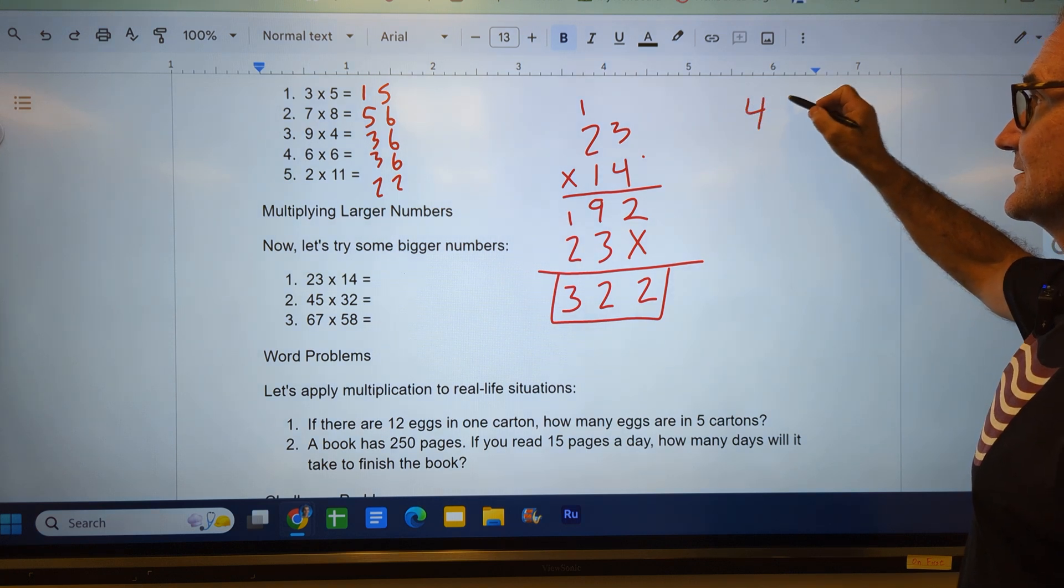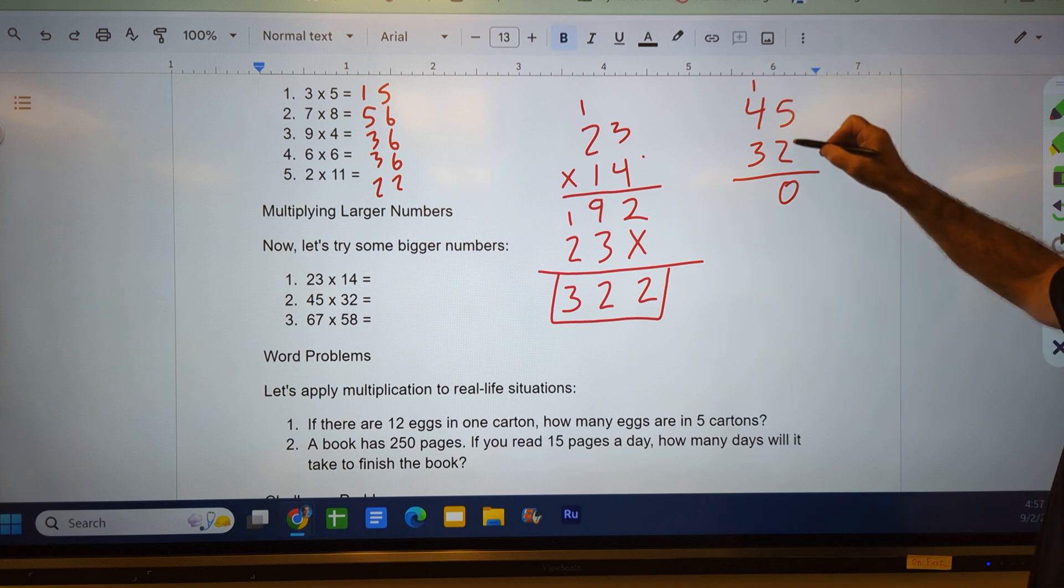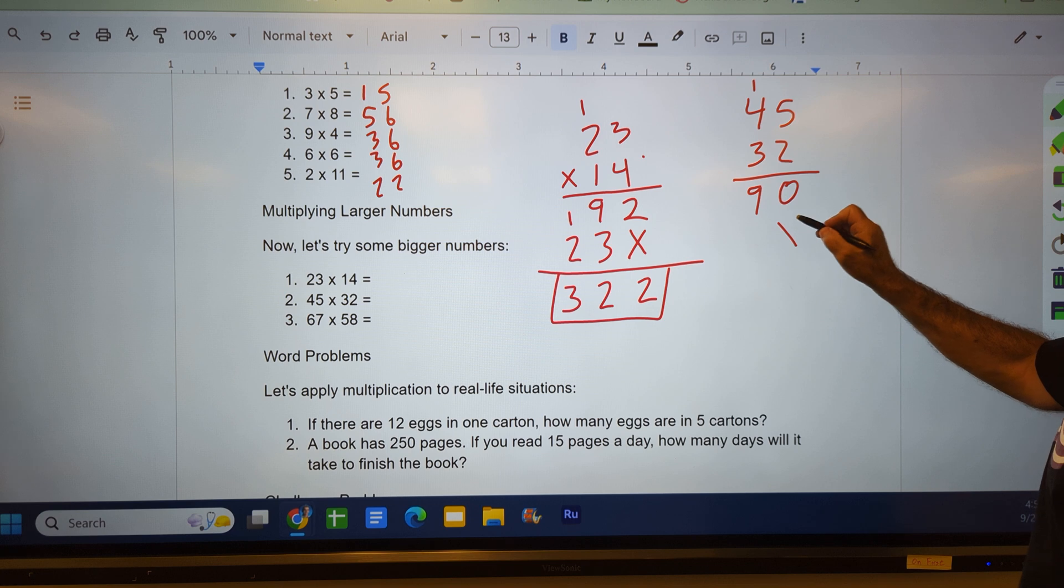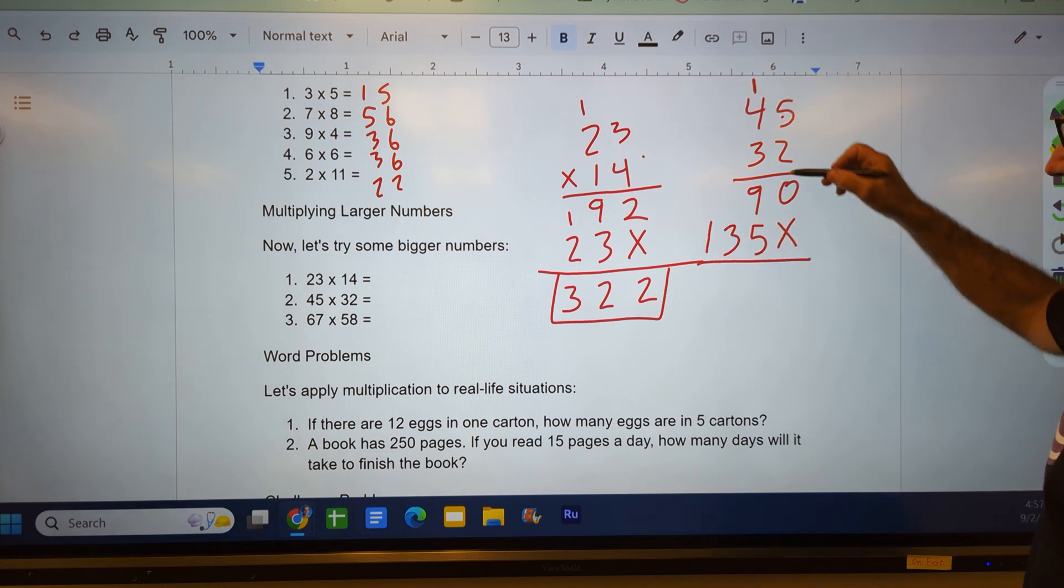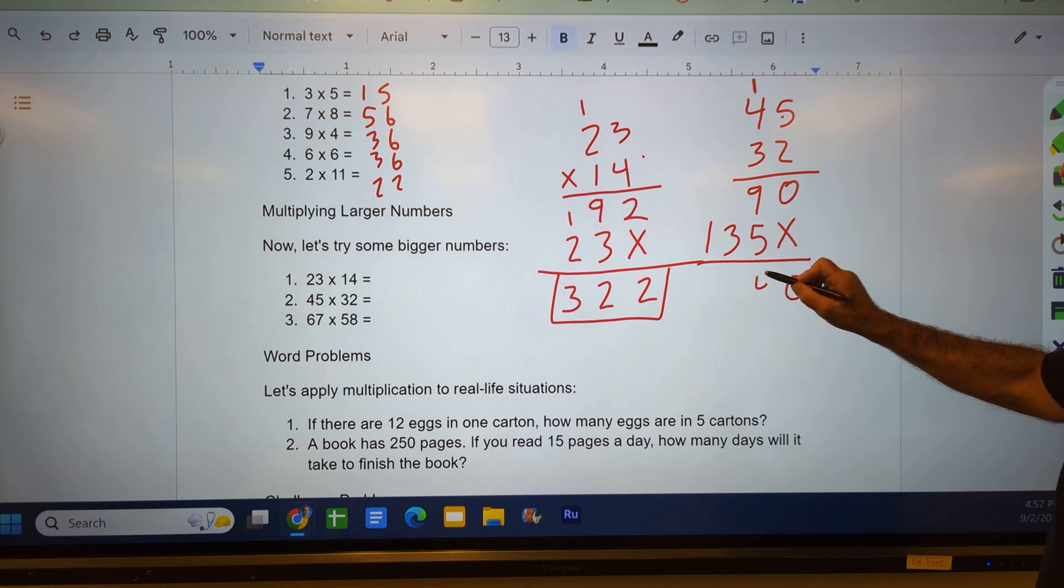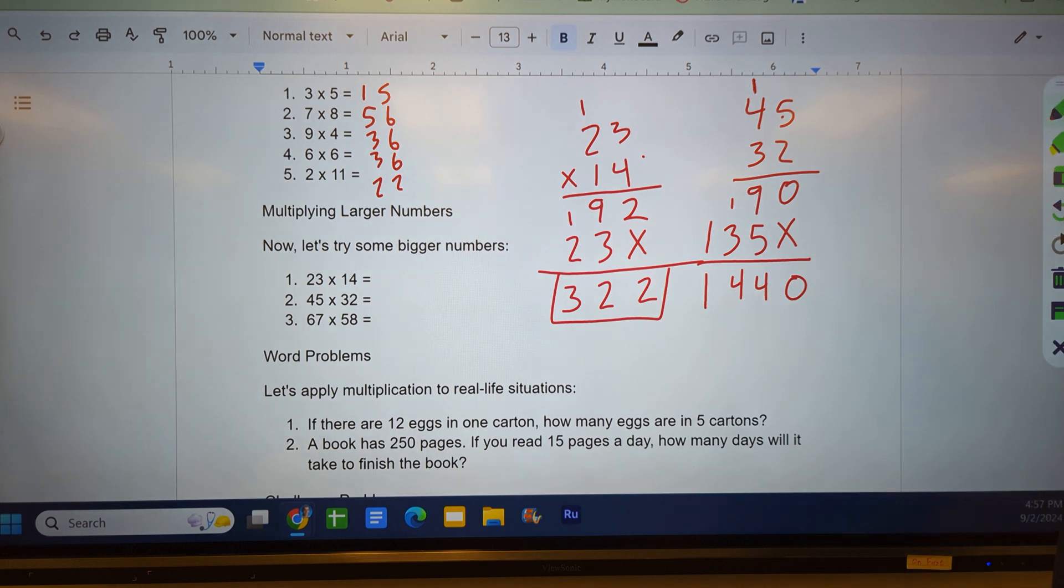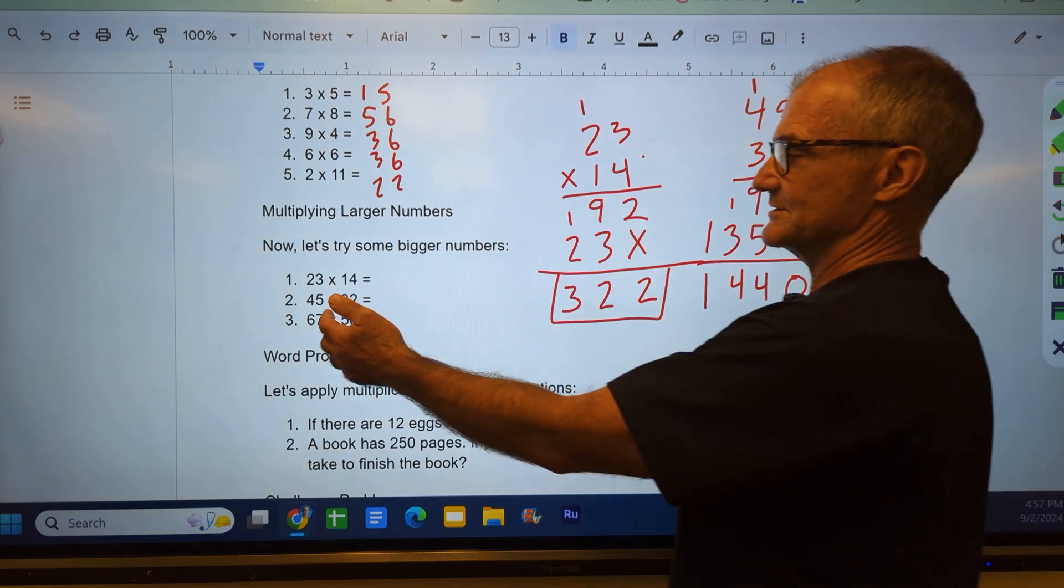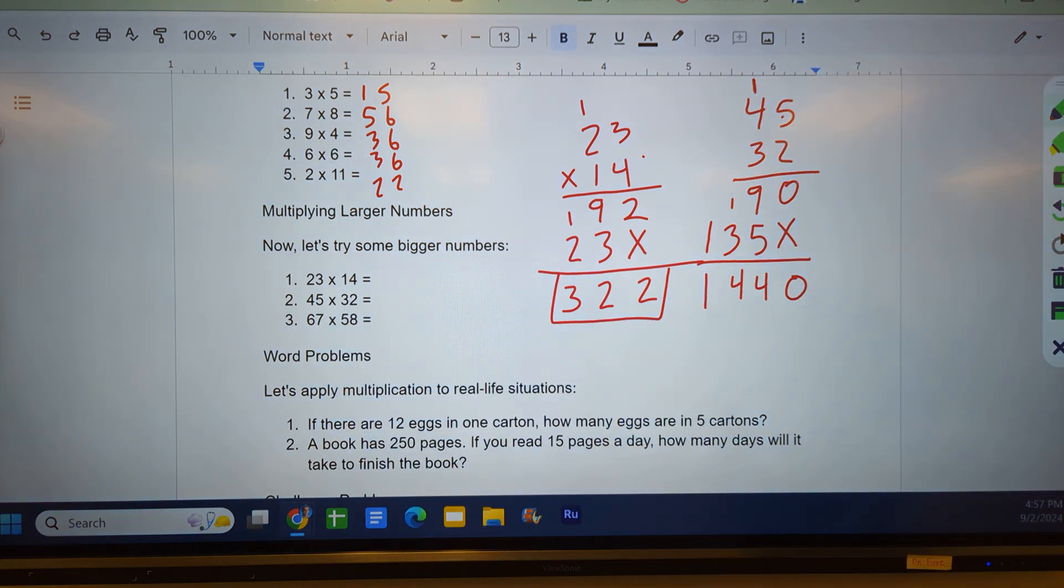Pause the video and do those two. Unpause, watch how I do it. 45 times 32. 2 times 5 is 10, carry the 1. 2 times 4 is 8, plus 1 is 9. Placeholder. 3 times 5 is 15, carry that 1. 3 times 4 is 12, plus that 1 is 13. Add straight down: 0, 14, carry a 1, 4, and a 1. See if that even makes sense. 40 times 40 would be 1600, so I certainly am in the ballpark right there.